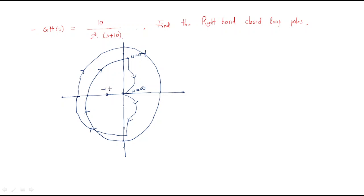The minus 1 plus j0 point is at this point only. By using this polar plot we draw the Nyquist plot, and by using this Nyquist plot we find out the right-hand side poles.